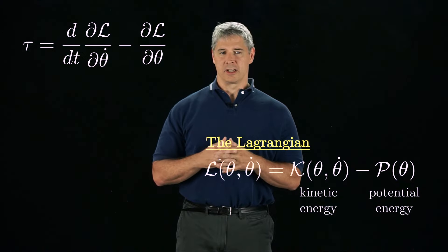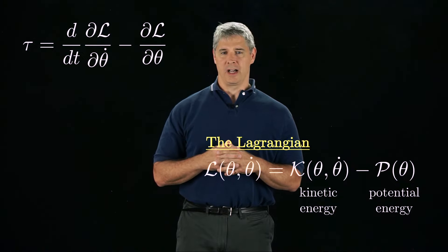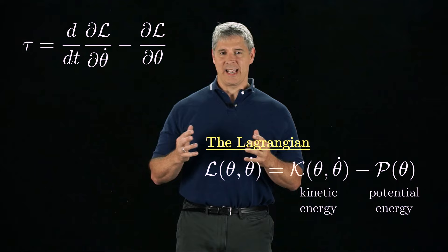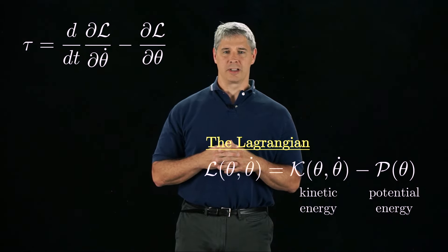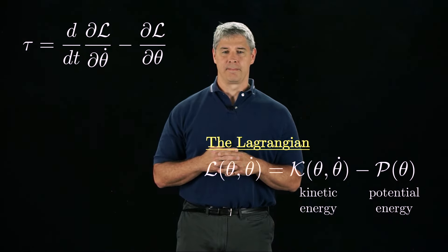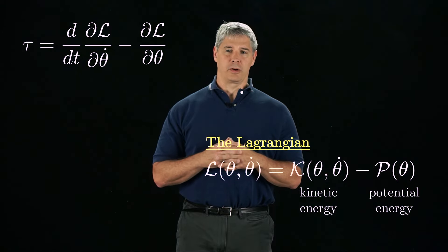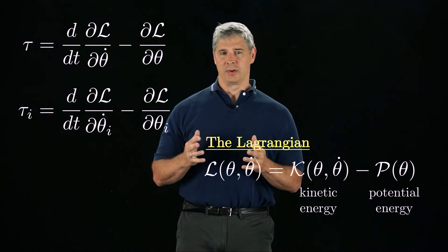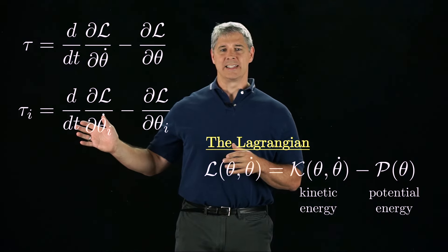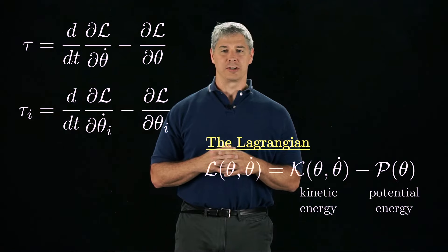The joint forces and torques, τ, are dual to the joint velocities θ̇, meaning that τ dotted with θ̇ represents the power consumed or produced by the joints. We can write this vector equation in its components, as shown here, where τᵢ is the i-th element of the n-vector τ.